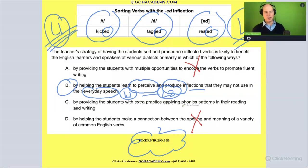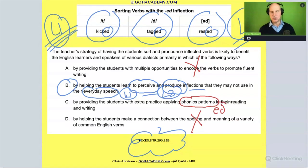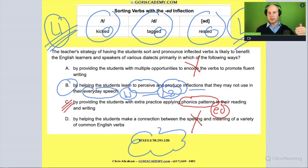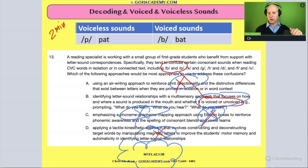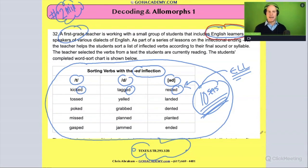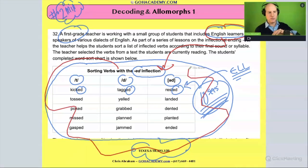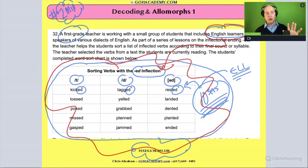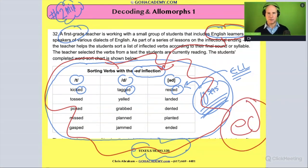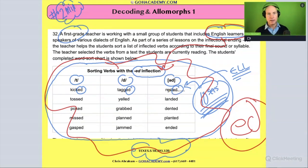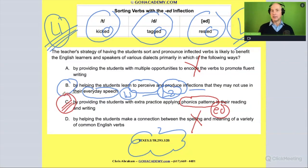Why is C wrong? The phonics pattern you're working on is ED and it's consistent throughout. C could have been a close second, but what C is missing — what it doesn't take into account — is that the scenario is working with English language learners. They need to work on this confusing rule, clarify it, and first hear how 'kicked,' 'tagged,' and 'rested' sound different even though they're all spelled the same. C glosses over that, but B addresses it. B is a much more precise answer for this particular group of students in this specific scenario.